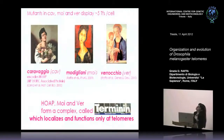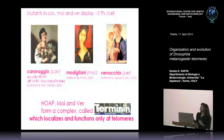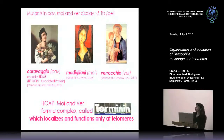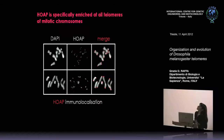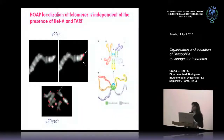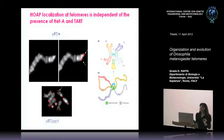Mutations in Caravaggio, Modigliani, and Verrocchio induce a severe telomere dysfunction phenotype with five telomeric fusions per cell. We demonstrated that these three proteins form a complex we decided to call the Terminin, because it binds the terminal part of the chromosome. This complex localizes and functions exclusively at telomeres. Here you can see HipHop immunolocalization on mitotic chromosomes — HipHop protein is enriched at all mitotic telomeres and also at polytene telomeres. Importantly, the binding of HipHop at telomeric sequences does not depend on sequence.